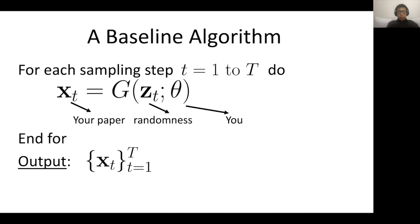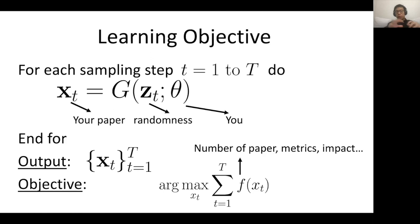We can talk about different objectives — how to measure these outputs. People count the number of papers and talk about metrics like citations, h-index, and so on. Fundamentally, people care about the impact of research and how research can change society as a whole. We're not arguing about which metric is better in this talk, but let's say you have some metric.